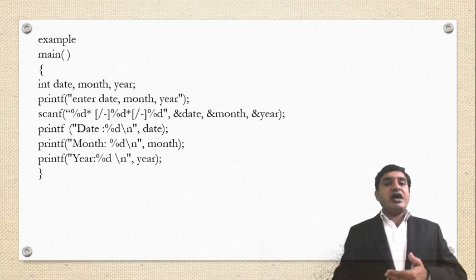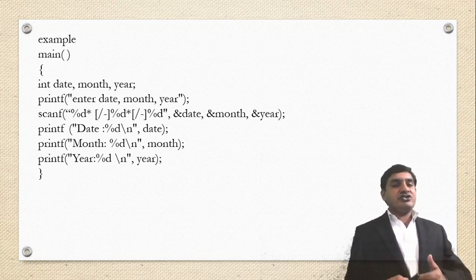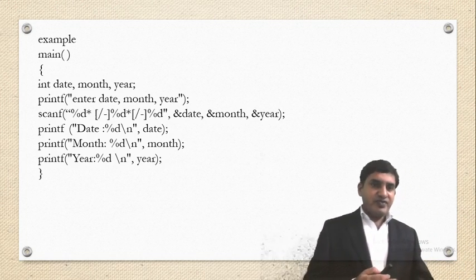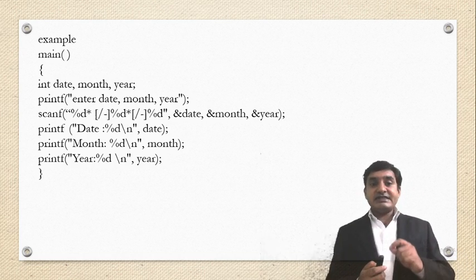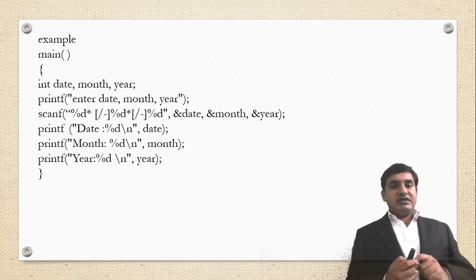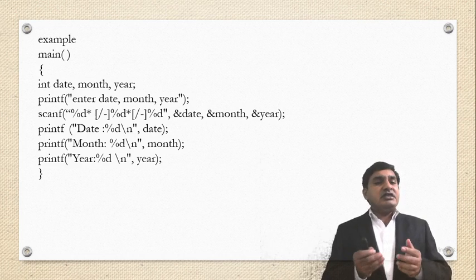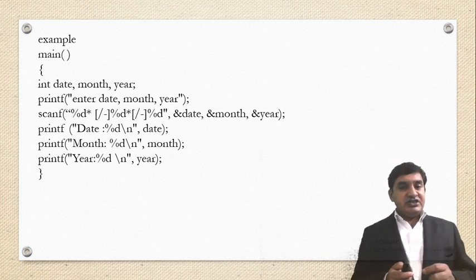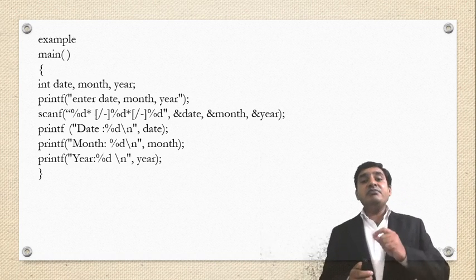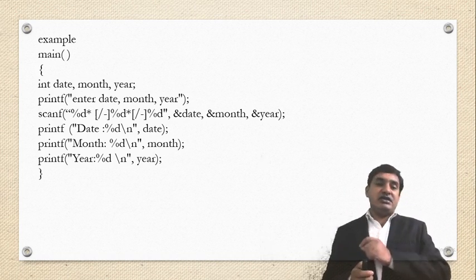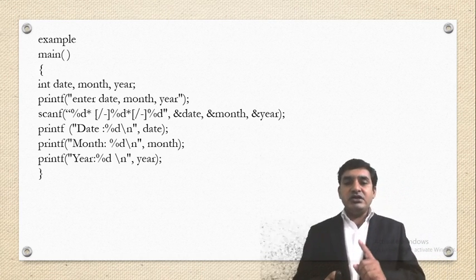We have to enter these values using the standard input function scanf. The scanf function uses %d for date (integer), a slash-n for new line, %d for month, and %d for year. So our inputs are date, month, and year.